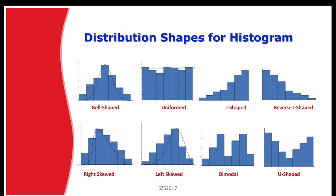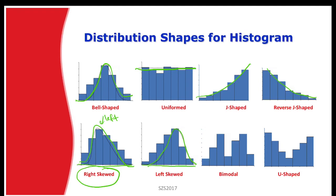These are distribution shapes for histograms. If your data looks symmetrical at the center, we call it a bell shape. If uniform across, we call it uniform. A J-shape and reverse J-shape are also possible. If the data is skewed to the right — peak at the left, tail pointing right — we call it right skewed. If skewed to the left — peak at the right, tail pointing left — we call it left skewed. There is also bimodal and U-shape.